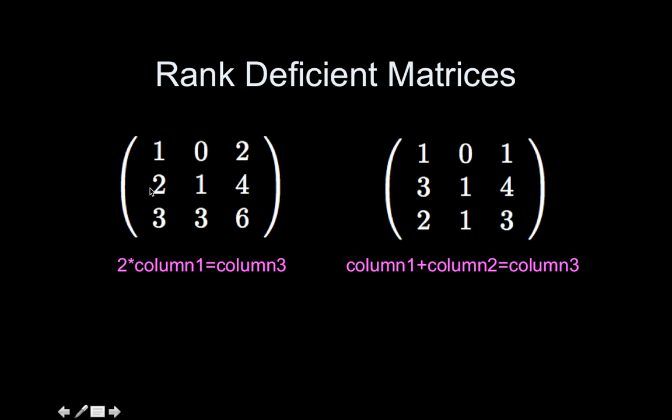So 2 times 1 is 2, 2 times 2 is 4, 2 times 3 is 6. So multiplying that first column times 2 gives me the third column, so this is rank-deficient.